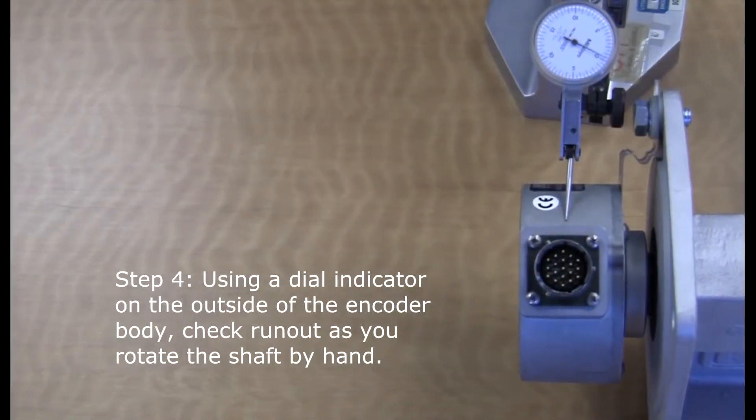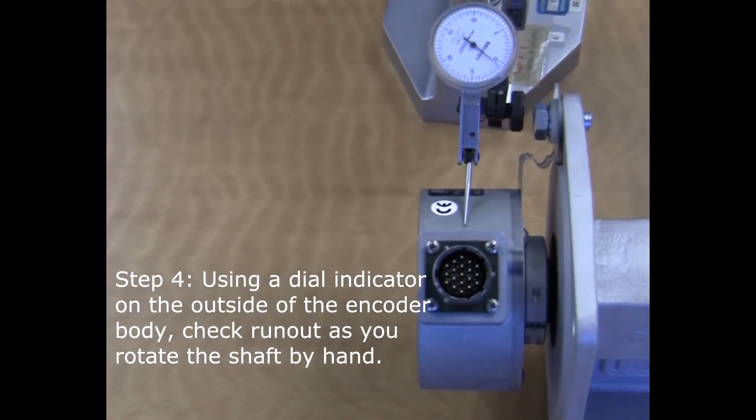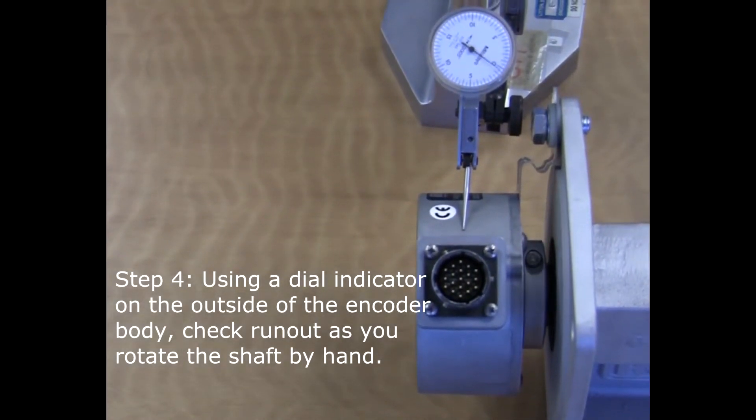Using a dial indicator on the outside of the encoder body, check the runout as you rotate the shaft by hand.